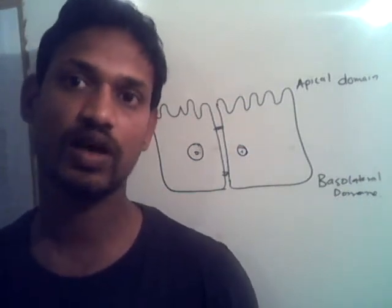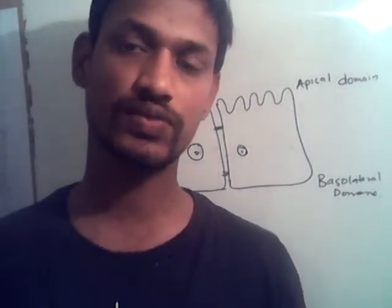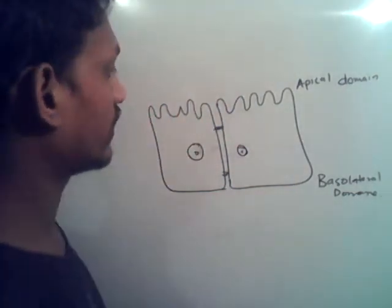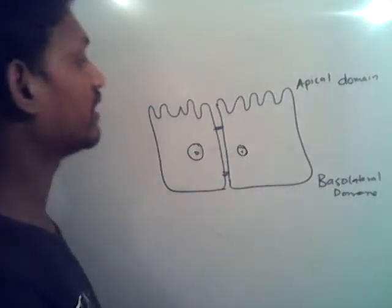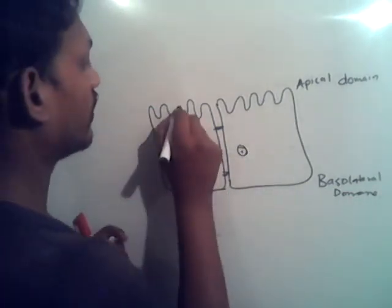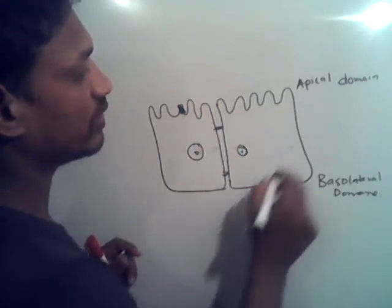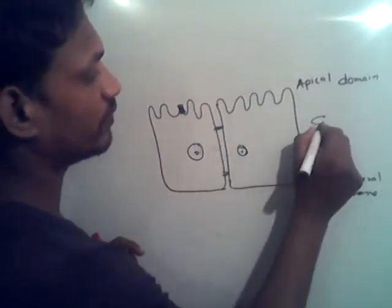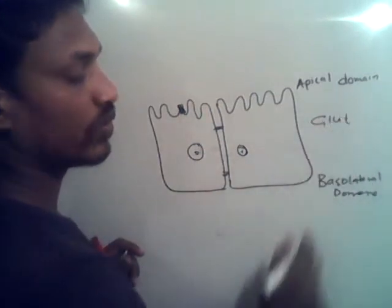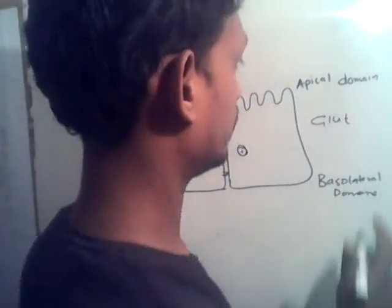For instance, we are taking the example of glucose — how glucose gets transported through the epithelial cell. These are the cells of the intestine. They contain a particular channel known as the glucose transport family protein.